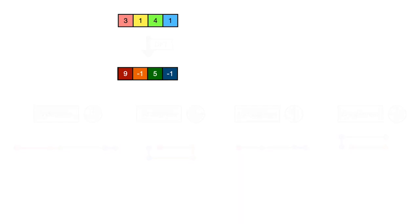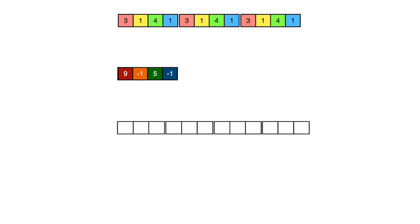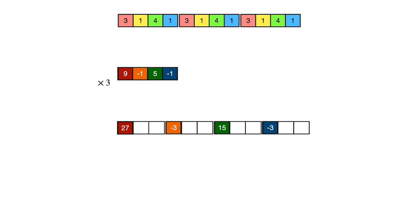Now let's see what happens when we repeat this sequence several times. We're going to have four blocks because the base sequence 3141 has four elements. The leading pivot in each block will be 9, minus 1, 5, minus 1, but multiplied by three because there are three repetitions — giving us 27, minus 3, 15, and minus 3. Everything else in the blocks is going to be zero. That's the DFT of the full repeated sequence.